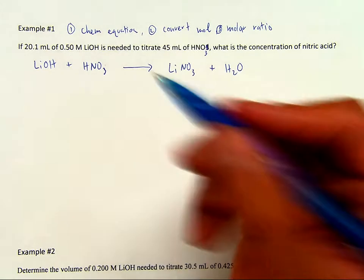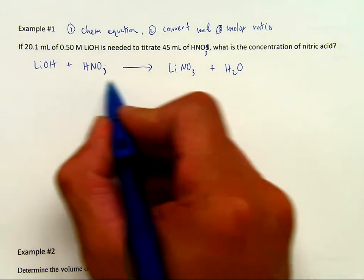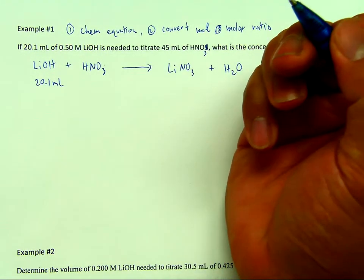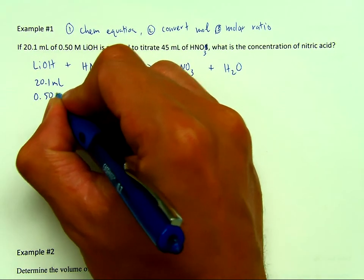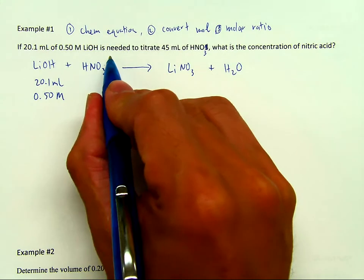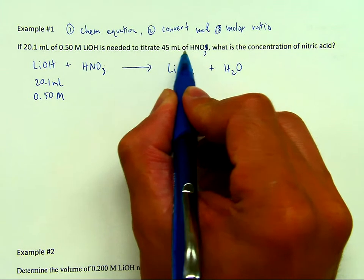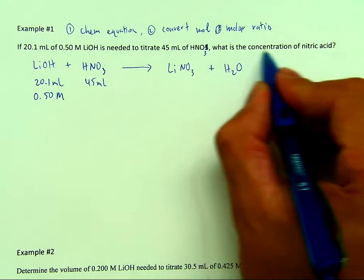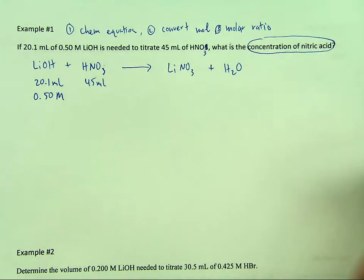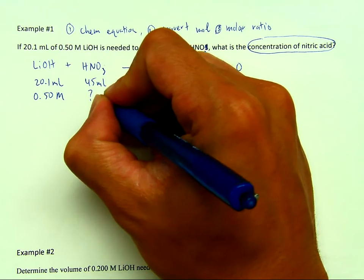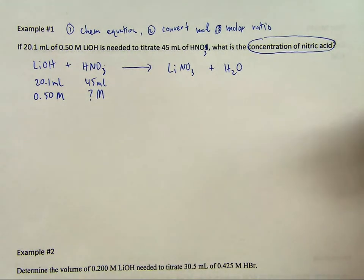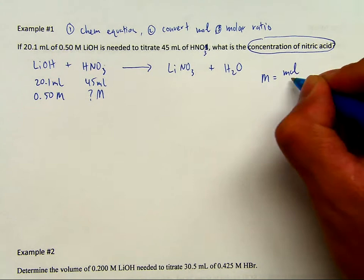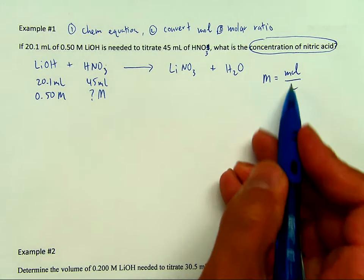What I like to do next is write all of the given information beneath the balanced chemical equation. We have 20.1 milliliters of lithium hydroxide, and the concentration is 0.50 molarity. It is needed to titrate 45 ml of nitric acid. What we don't know is the concentration of nitric acid, so I'll write a question mark with capital M, because that stands for concentration. Molarity equals mole over liter.